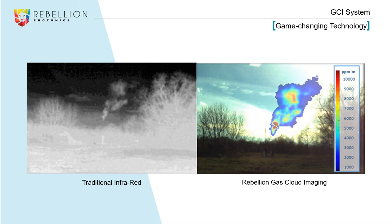This is another image showing the power of our gas cloud imaging. You can clearly see it is not steam or fog — it is gas. On the left, with a traditional IR camera, you might be confused, especially in a refinery or chem plant where there's a lot of steam or fog going on. Our images are very clear in that regard.